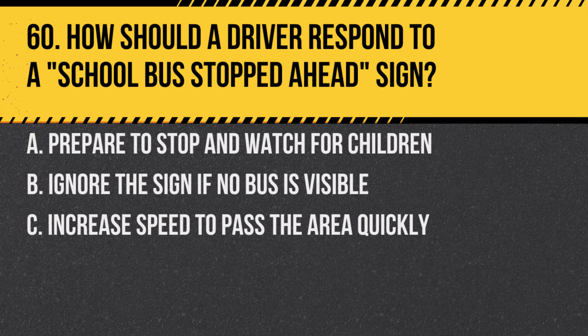Question 60. How should a driver respond to a school bus stopped ahead sign? A. Prepare to stop and watch for children. B. Ignore the sign if no bus is visible. C. Increase speed to pass the area quickly. Answer: A. Prepare to stop and watch for children. This sign warns of potential stops and children crossing the road.